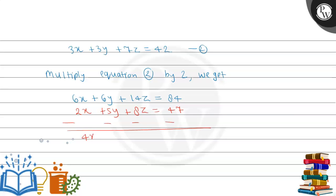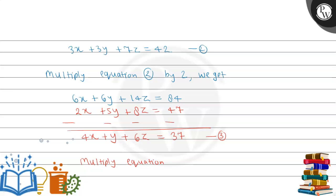Subtracting: 6x - 2x = 4x, plus y, plus 14z - 8z = 6z, equals 84 - 47 = 37. So 4x + y + 6z = 37. Let this be equation 3. Now multiply equation 3 by 3. We get: 12x + 3y + 18z = 111.